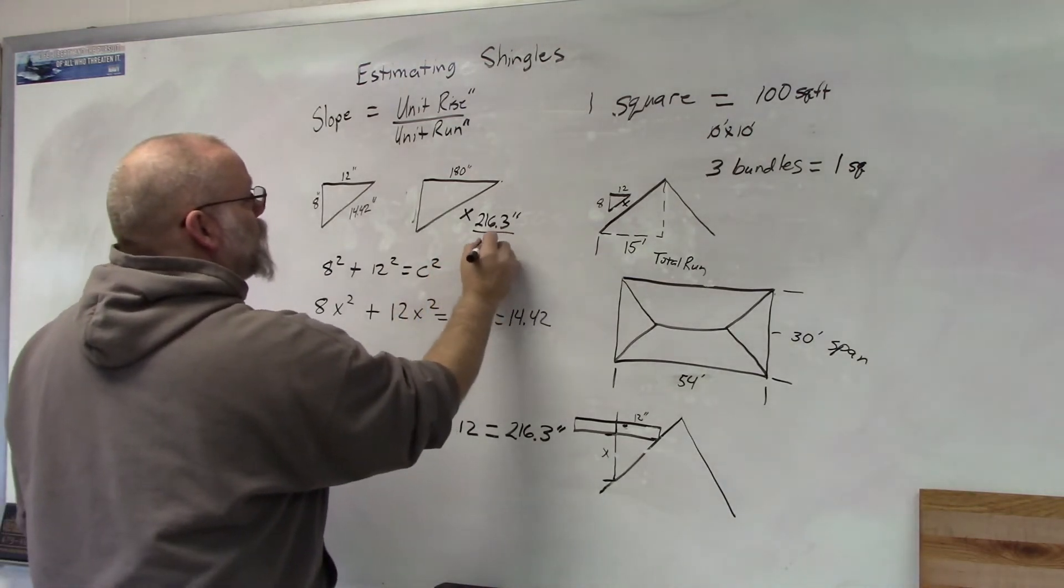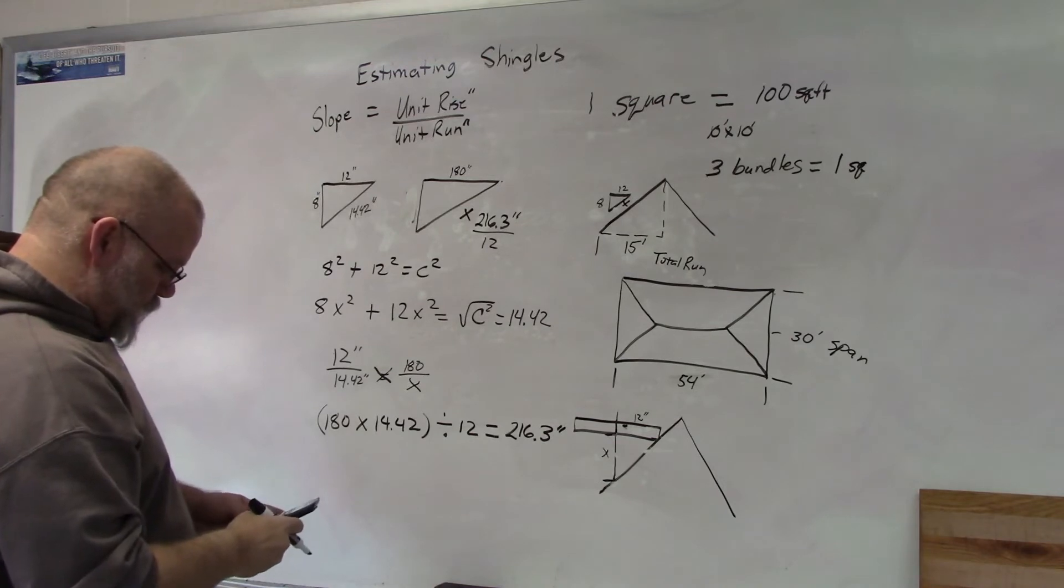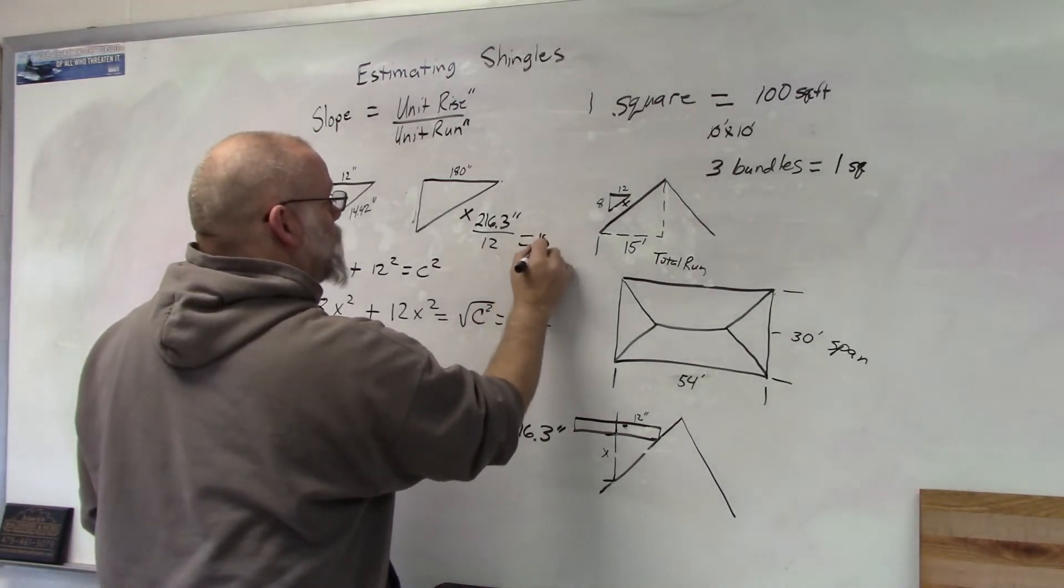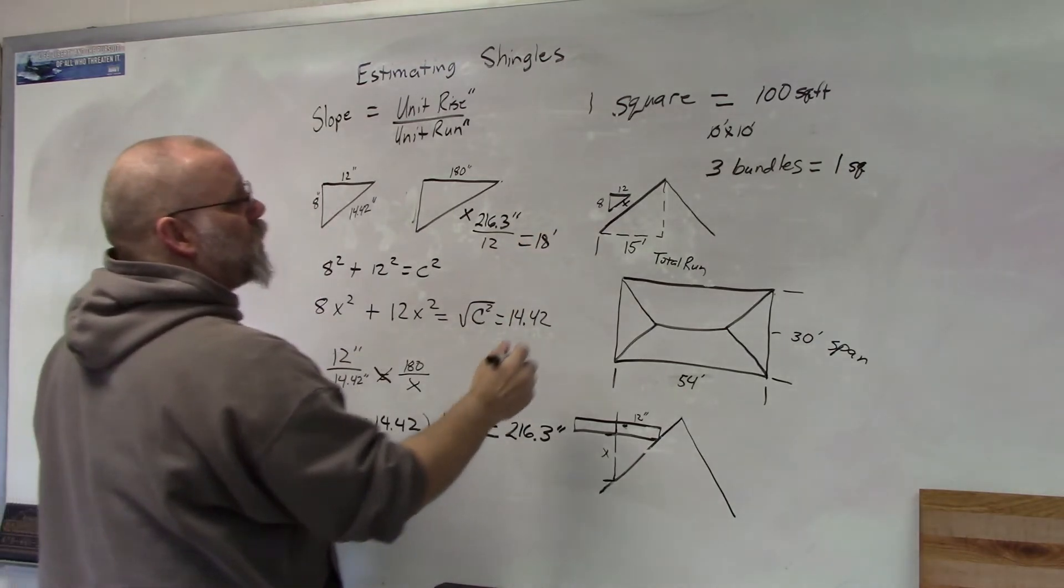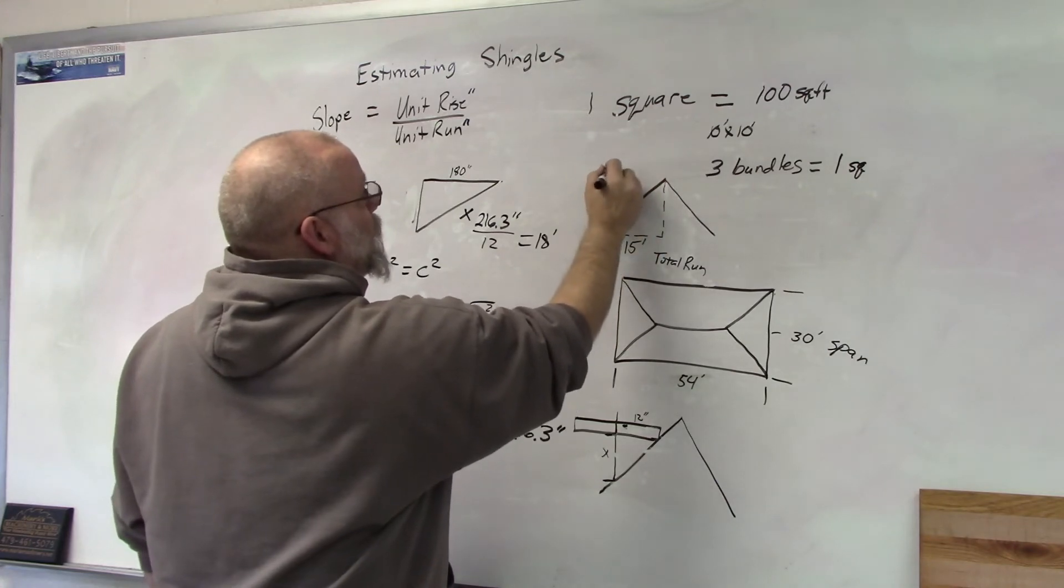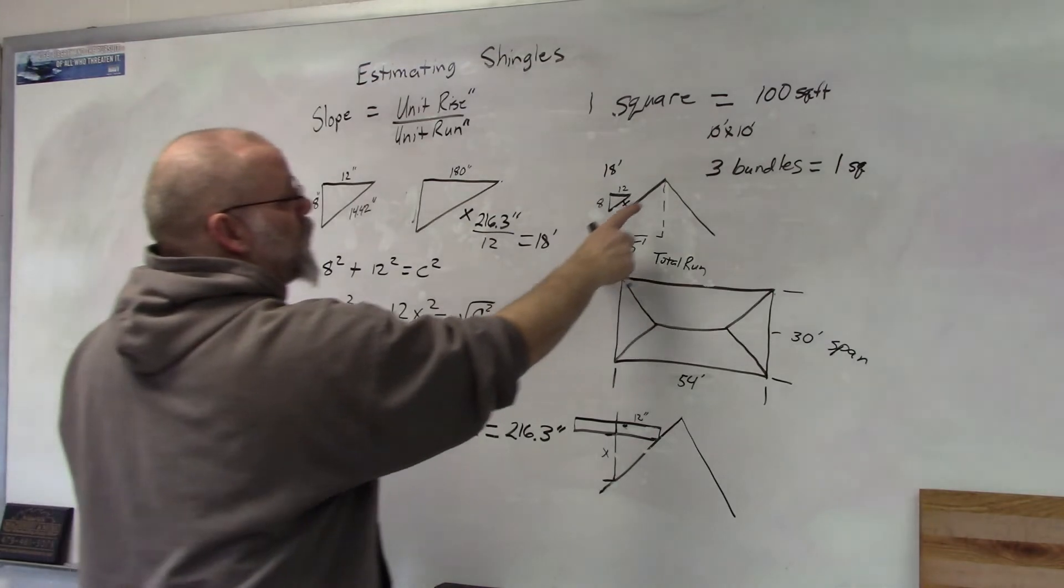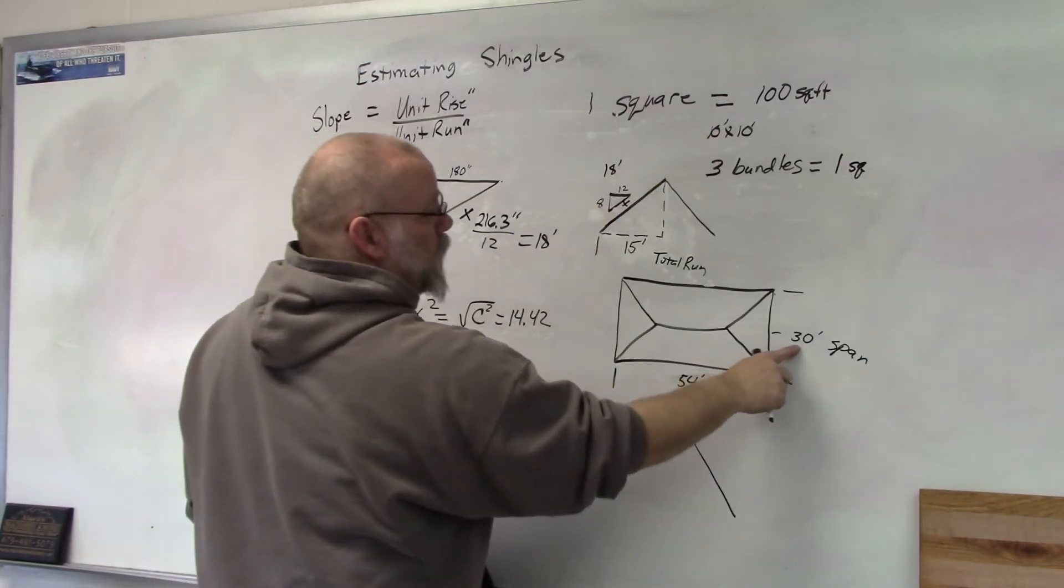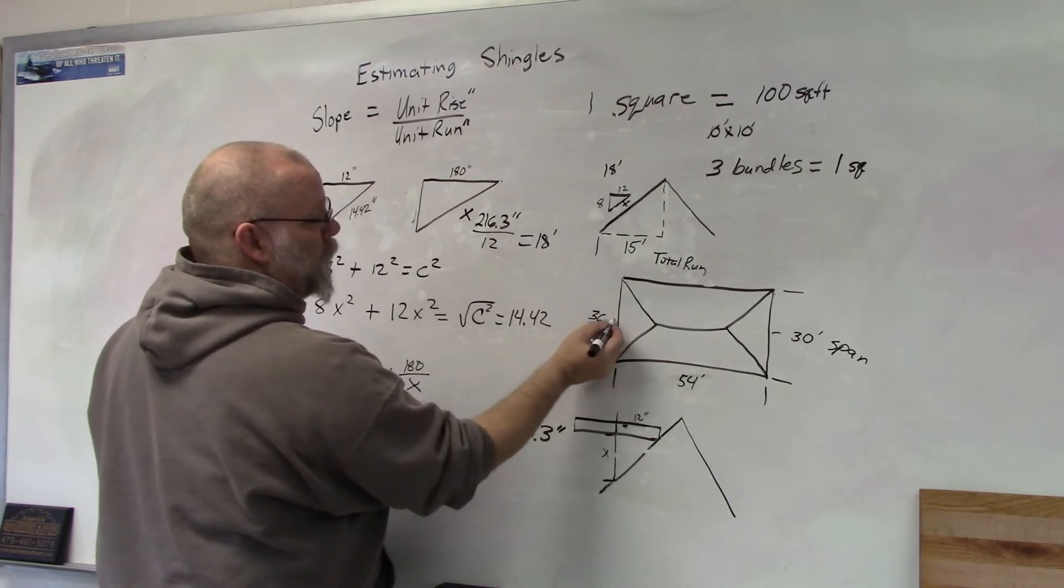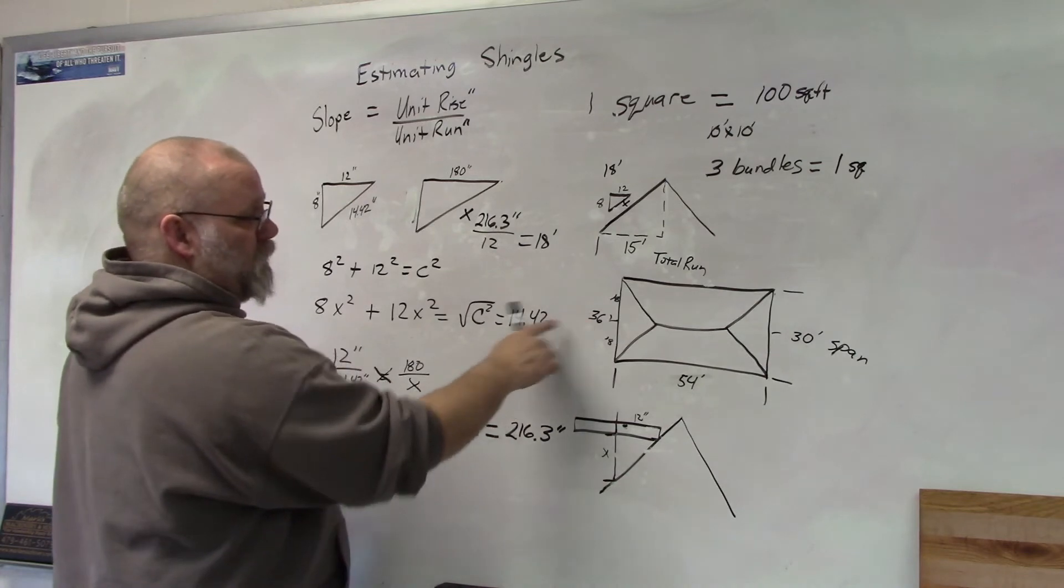Since we want to work in feet, we're going to take this number and divide by 12 to convert to feet. Divided by 12 is 18 feet. So this slope length is 18 feet. That will give me the width of the building. Instead of the span of 30, I have a width of 36 feet because I have 18 on this side and 18 on this side.